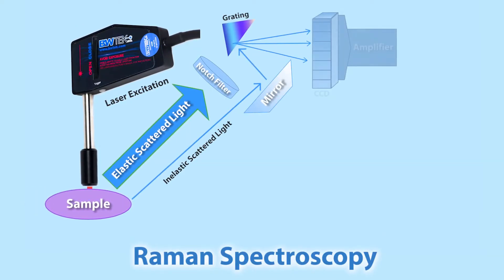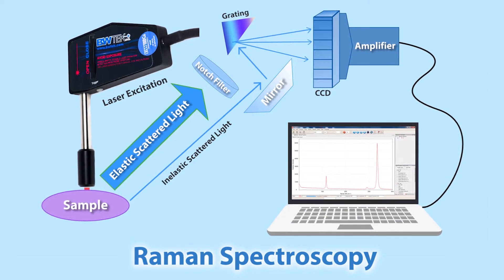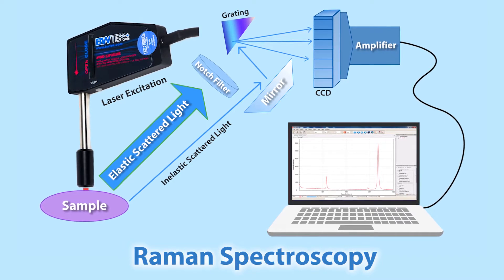Raman spectroscopy is sensitive to even slight differences in molecular structure, making it an invaluable tool for investigating graphene and other allotropes.